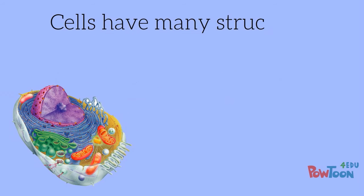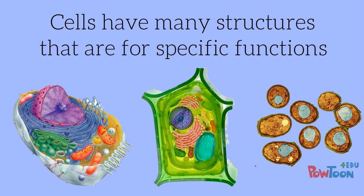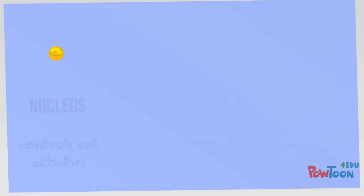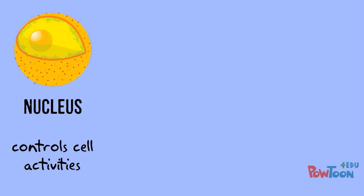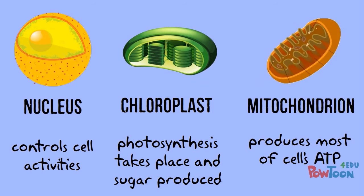The ultra-structure contains many organelles that carry out specific functions. For example, the nucleus, which is the control centre of the cell; chloroplasts, where sugar is produced by photosynthesis; and mitochondria, the batteries of the cell, where ATP is generated.